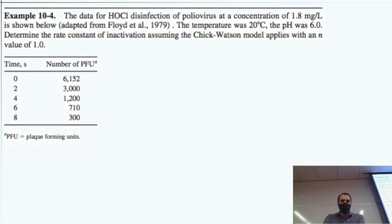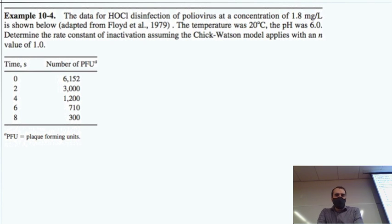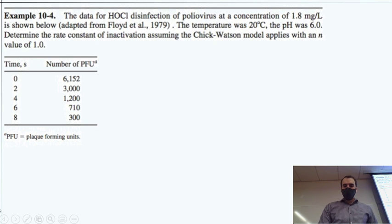Here's an example: data for HOCl disinfection of poliovirus at a concentration of 1.8 milligrams per liter of chlorine, adapted from a 1979 study. Temperature was 20°C, pH was 6. The task is to determine the rate constant for inactivation, assuming the Chick-Watson model applies. We're going to take a look at this data and find the rate constant.